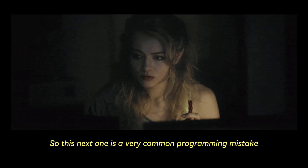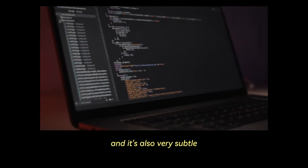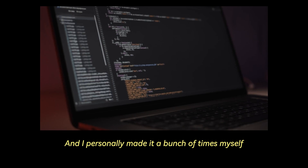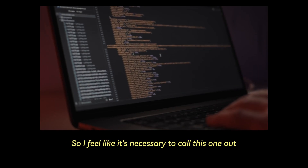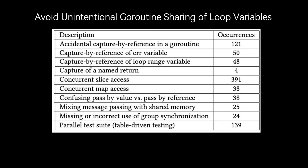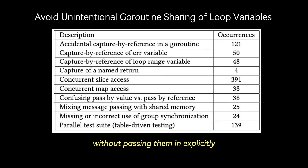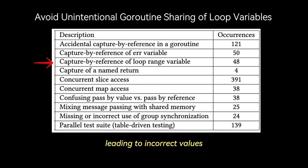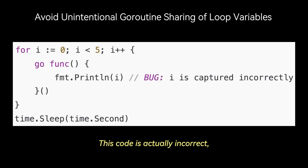This next one is a very common and subtle mistake I've personally made many times: avoiding unintentional goroutine sharing of loop variables. A super common mistake is using loop variables inside a goroutine without passing them in explicitly, which causes all goroutines to capture the same variable reference, leading to incorrect values. This code is incorrect because i is shared across all goroutines.